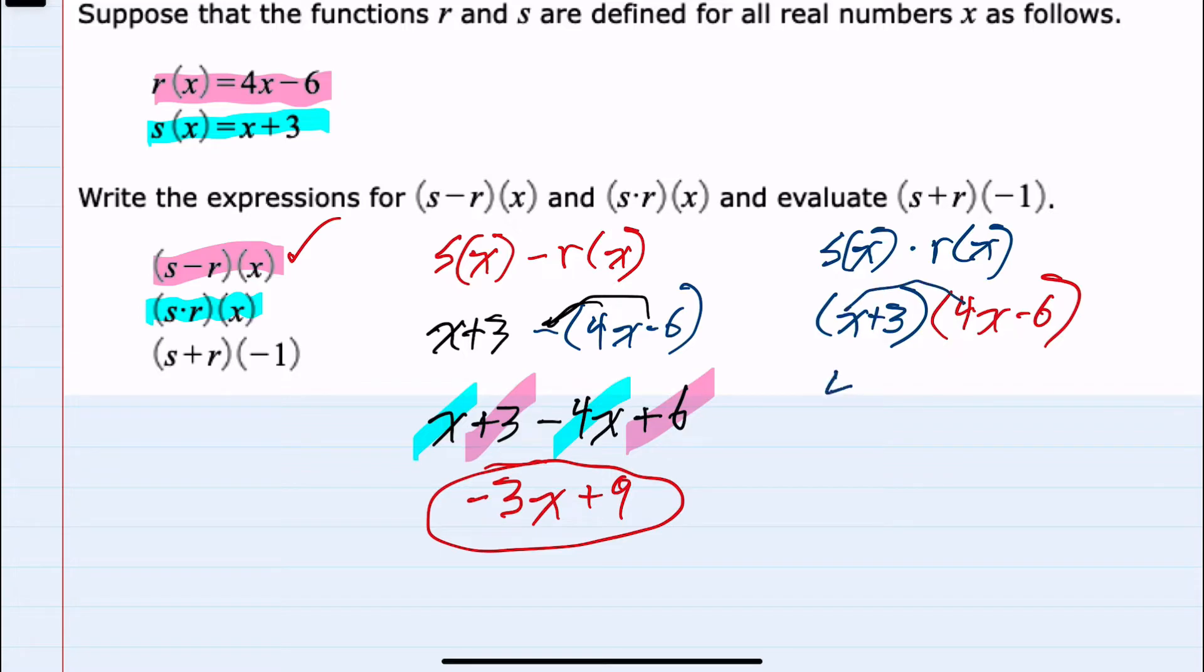x times 4x is 4x squared, x times a minus 6 is minus 6x, 3 times 4x is plus 12x, and 3 times a minus 6 is minus 18.